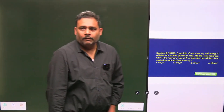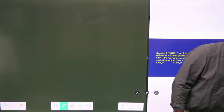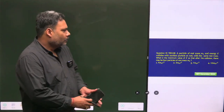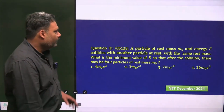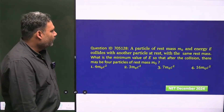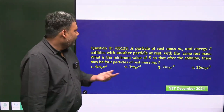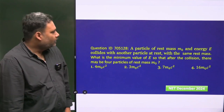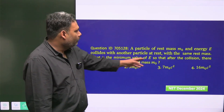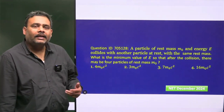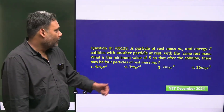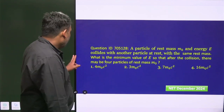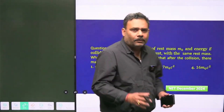Hello friends, let's try to solve a very beautiful problem from CSIR NET. This problem is from special relativity and we will use the concept of four vectors. This is a really new question — first time they have asked this type of question. A particle of rest mass m₀ and energy E collides with another particle which is at rest, and we have to calculate the minimum value of E such that at least four particles are generated, all with rest mass m₀.